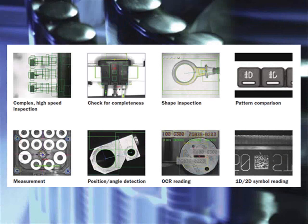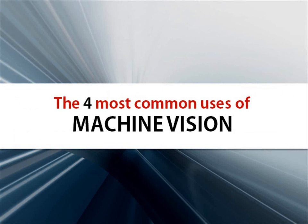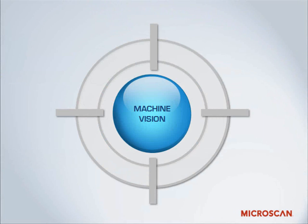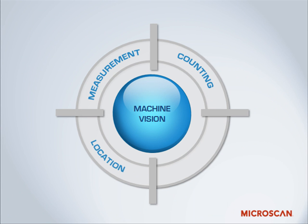Machine vision has come a long way since then and is now used for many different valuable processes in manufacturing. Let's talk about some of the most common applications. As it has developed, machine vision's applications have grown into four basic functions: Measurement, Counting, Location, and Decoding.